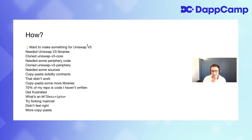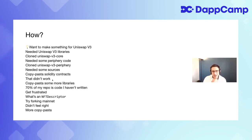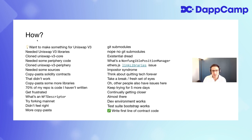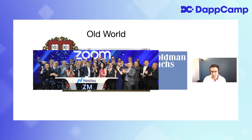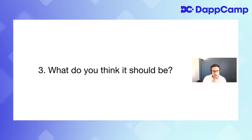I gave a talk explaining how I wrote the Uniswap V3 staker. I started off wanting to make something for Uniswap V3, so I cloned some libs, cloned more code, dealt with submodules — all this annoying stuff that happens between wanting to do something and being able to do it. It sounds difficult and it is, but learning all this is something you can do in a couple of days, whereas everything you needed to do in the old world to take something public was much harder, much longer, and something you didn't have control over.